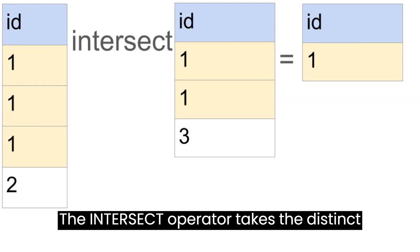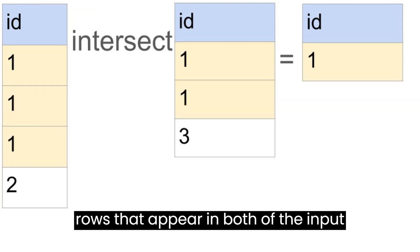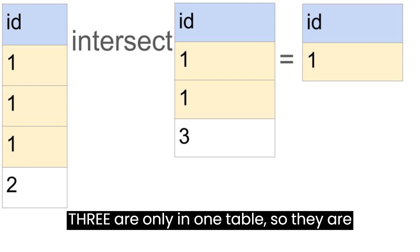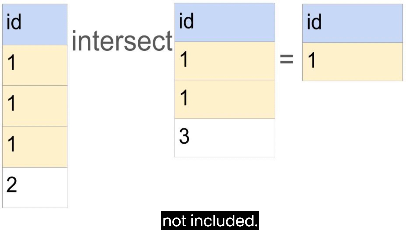The INTERSECT operator takes the distinct rows that appear in both of the input tables. One appears in both tables, so it is included in the result. 2 and 3 are only in one table, so they are not included.